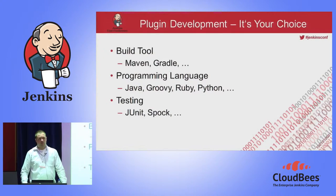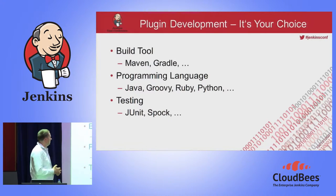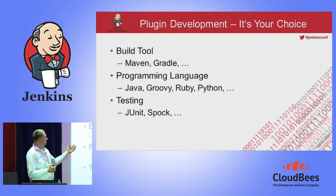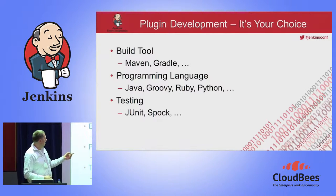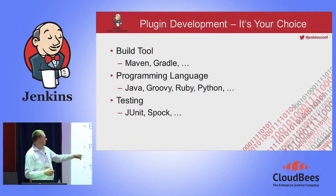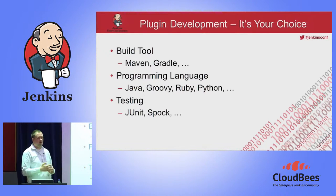When you start a new plug-in for Jenkins, you have some options on how to implement the plug-in. You can choose the build tool — the obvious choice would be Maven, but you can also use Gradle. And you can choose your programming language: the obvious choice is Java, but you can also use Groovy. There's also info on the wiki about Ruby and Python plug-in development.